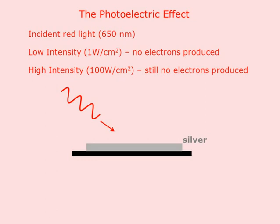First we'll start with red light, say 650 nanometers. We shine the red light on the silver and we get no electrons produced. We can do this at low intensity, say 1 watt of power, or at high intensity, say 100 watts — and there are still no electrons produced regardless of the intensity of light.